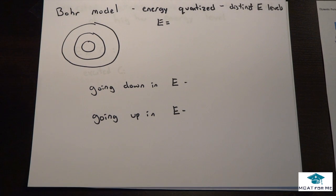So the next thing we're going to be talking about is the Bohr model of the atom. And so what is the Bohr model of the atom? All it is, it's a model that we use to show different energy levels and to show that energy is quantized. And quantized means that there are distinct energy levels.